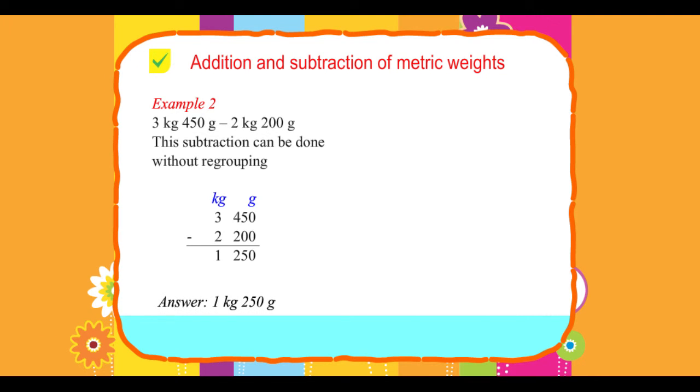Answer: 1 kg 250 grams. Example 3: 9 kg 200 grams minus 5 kg 400 grams. Arrange the numbers and convert to grams to subtract.